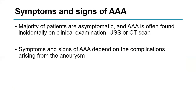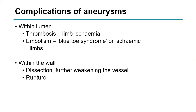What symptoms and signs do patients with abdominal aortic aneurysm present with? The majority are asymptomatic. Most patients are found incidentally on clinical examination or incidentally on ultrasound or CT scan performed for other abdominal pathology. Symptoms and signs depend on the complications arising from the aneurysm. Using the framework of within the lumen, within the wall, and outside the lumen, we can classify the complications of aneurysms in a simple and memorable way.